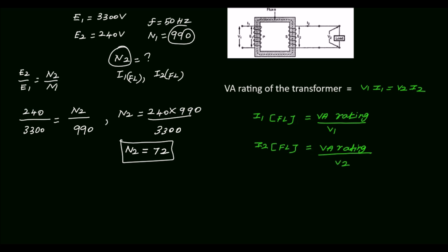Next, we will calculate the primary and secondary full load current. Normally the transformer rating is expressed in VA (volt-ampere). The VA rating of the transformer is the same on both the primary and secondary side. On the primary side, VA rating equals V1 times I1. On the secondary side, VA rating equals V2 times I2, where V1 is the primary terminal voltage, I1 is the primary full load current, V2 is the secondary terminal voltage, and I2 is the secondary full load current.